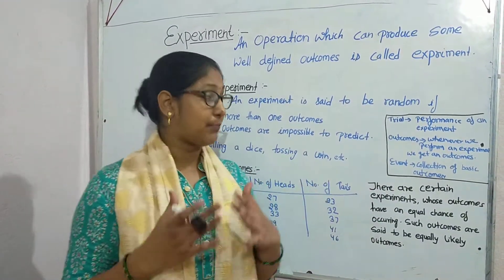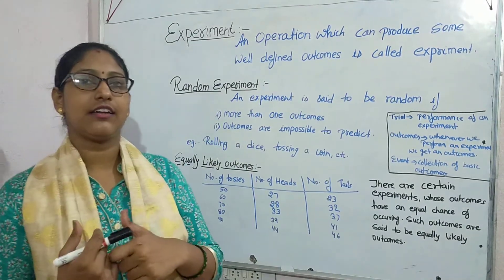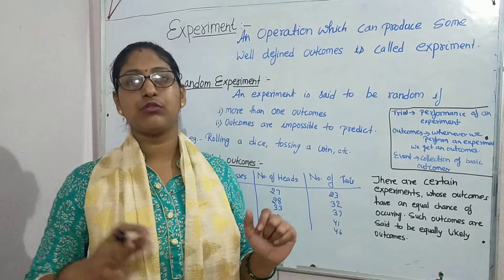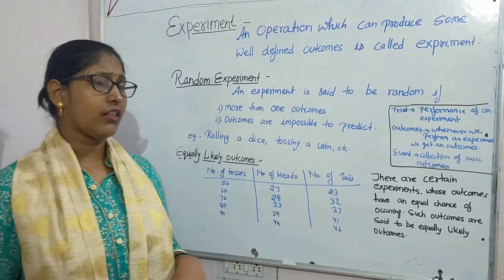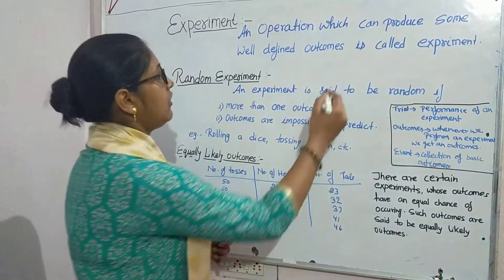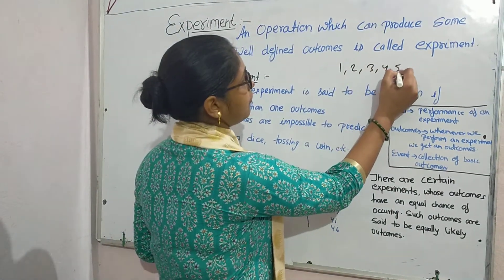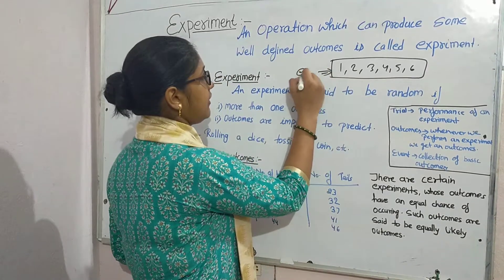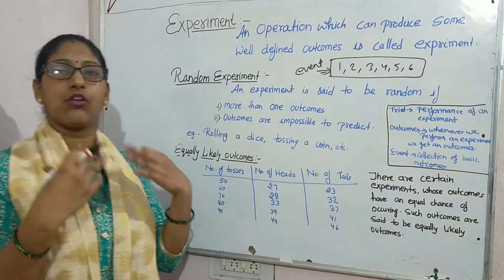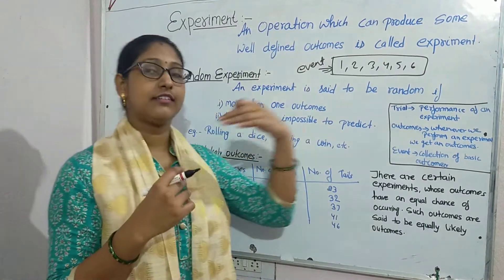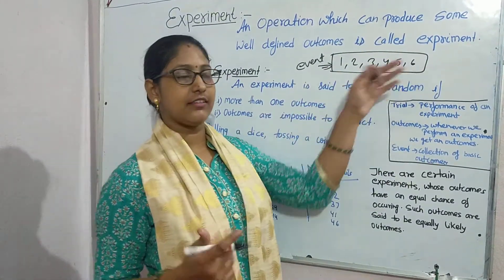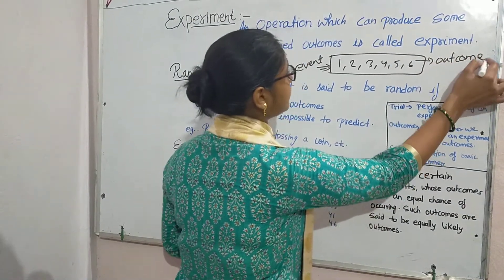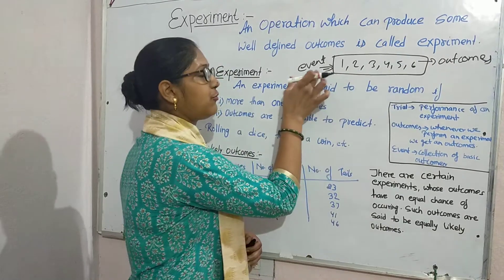Whenever we perform an experiment, we get some results, and these results are said to be outcomes. For example, when we are rolling a dice, 1, 2, 3, 4, 5, 6 are our outcomes. When we collect 1, 2, 3, 4, 5, 6 together, then they are collectively said to be an event. So when rolling a dice, it is a trial; 1, 2, 3, 4, 5, 6 separately are outcomes, and collectively they are called an event.